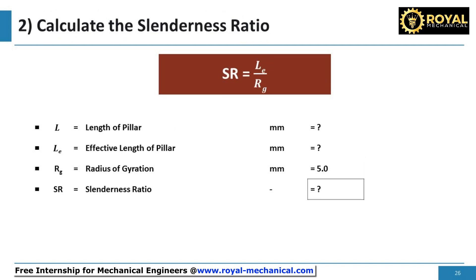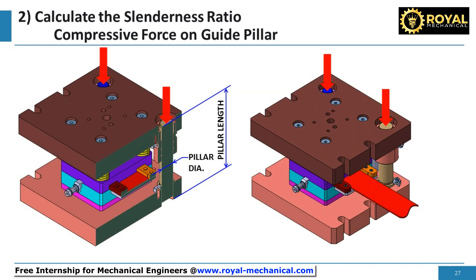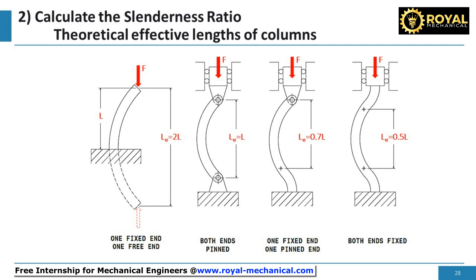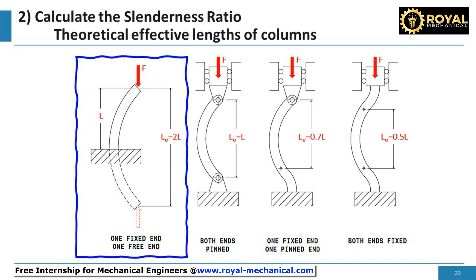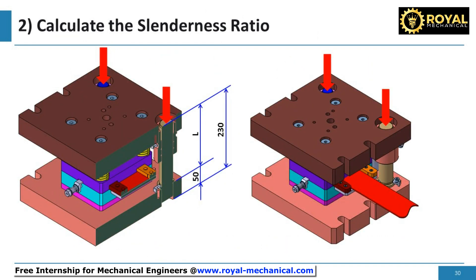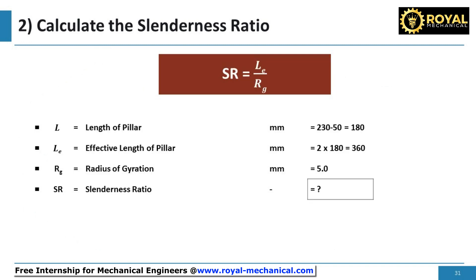Next, let's calculate the slenderness ratio. The formula is: LE divided by Rg, where LE is the effective length of the pillar. As the guide pillar experiences an axial load and is designed for buckling, the end condition applicable is one fixed end and one free end, giving an effective length LE equal to 2 times L. L is equal to 230 millimeters minus 50 millimeters — where 230 millimeters is the guide pillar's total length and 50 millimeters is the die shoe thickness — giving L equal to 180 millimeters and LE equal to 360 millimeters. Substituting all values, the slenderness ratio is equal to 72.